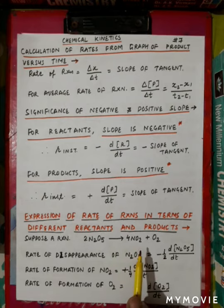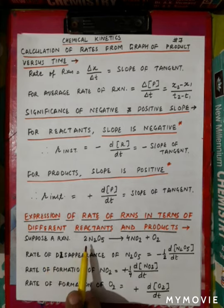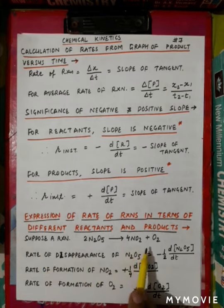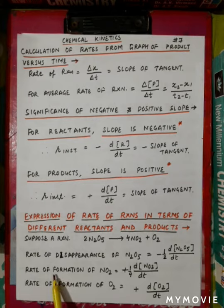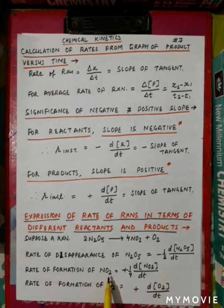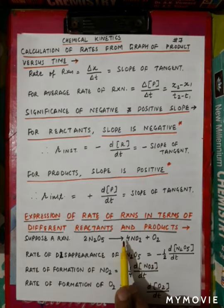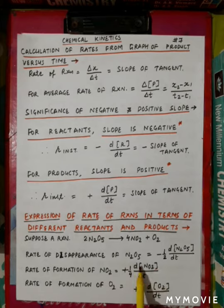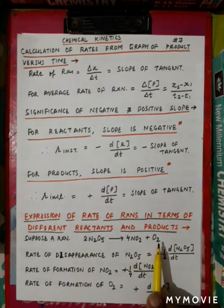Moving on to product: if we used the word 'disappearance' for reactant, we use 'appearance' or 'formation' for nitrogen dioxide. The rate of formation of nitrogen dioxide is equal to plus 1 by 4 times the change in molar concentration of NO2 upon dt. After this, the available variables would be divided accordingly.